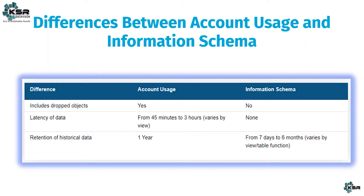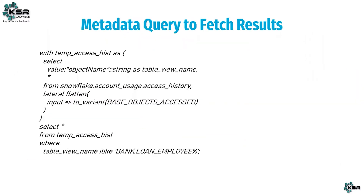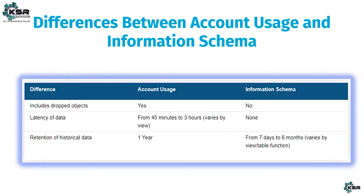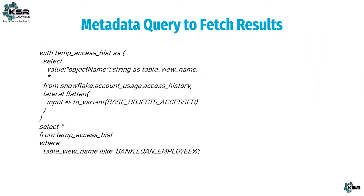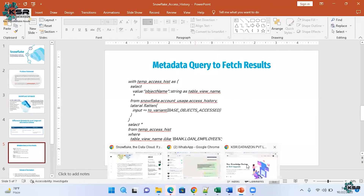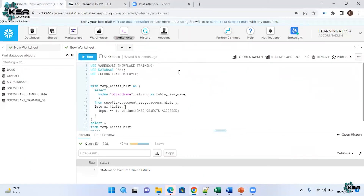To reiterate the problem statement: there are some jobs running in the backend and accessing tables in a particular schema — the loan_employee schema inside the bank database. Management doesn't know who is executing those queries, what base tables are being executed, and which base tables haven't been used in the last year. The impact is that these jobs are using warehouses and increasing costs and billing rates. Let's switch to the Snowflake UI to resolve this.